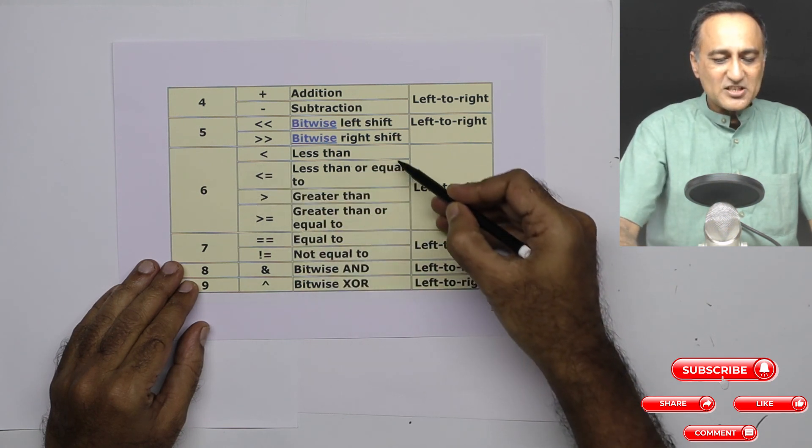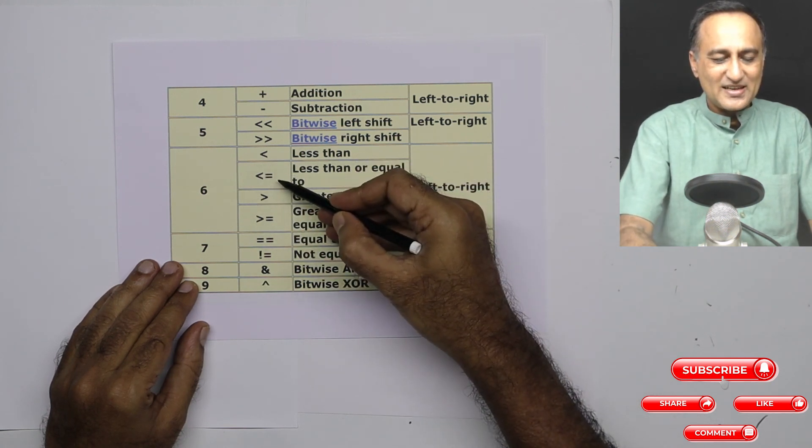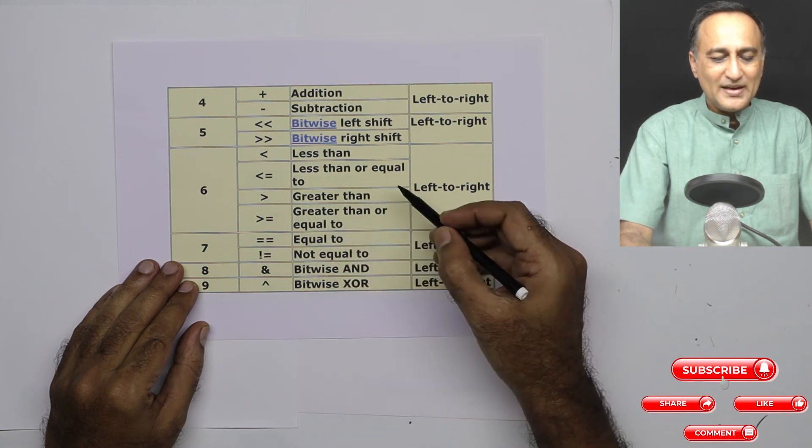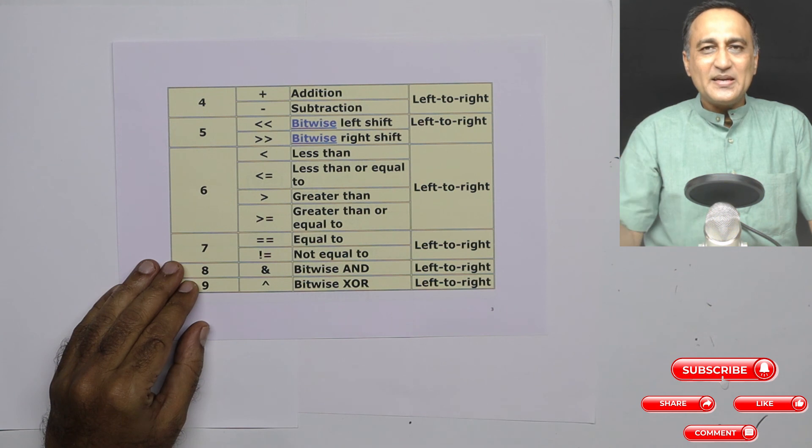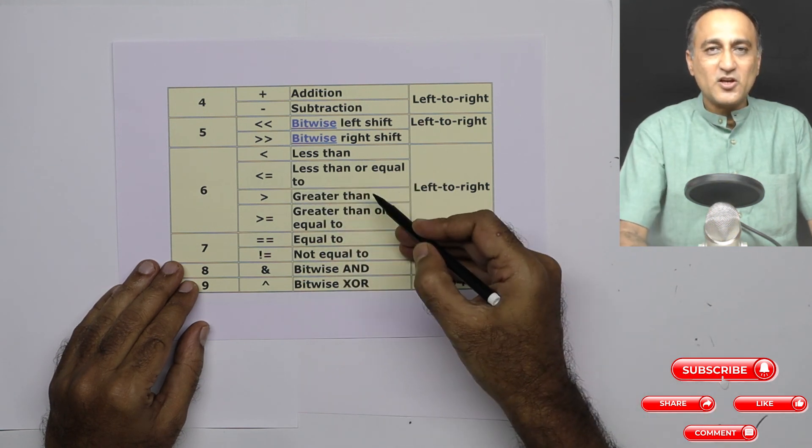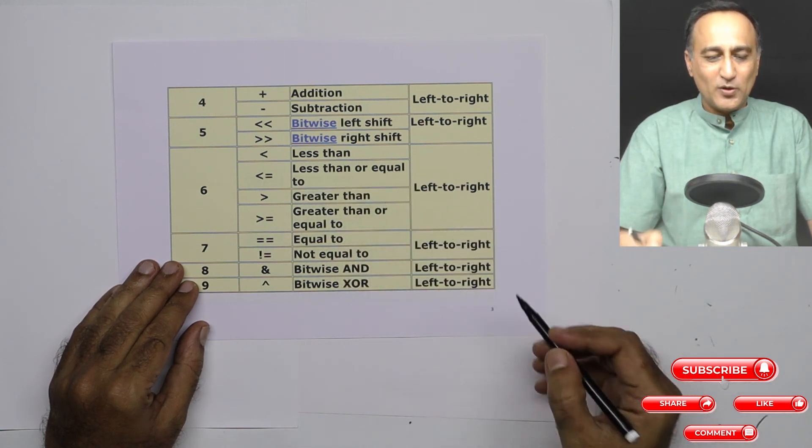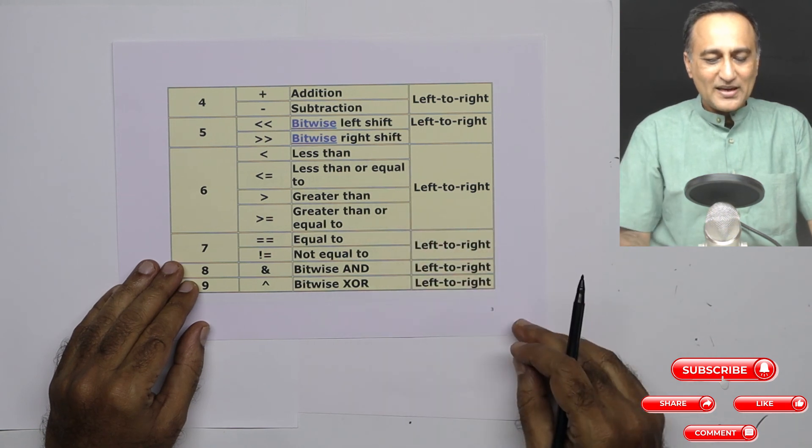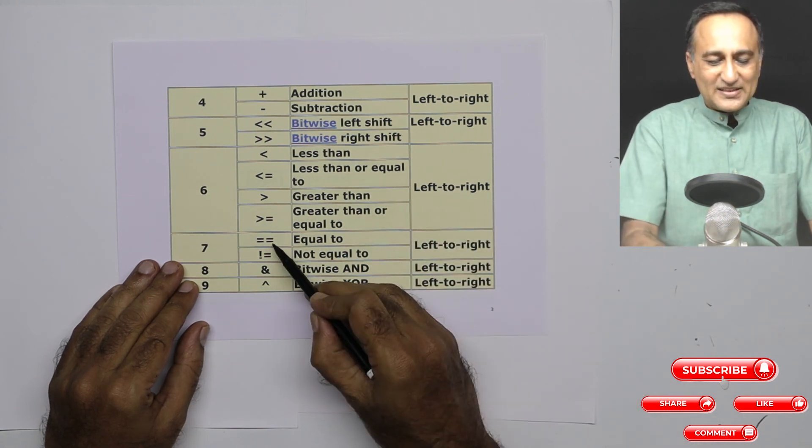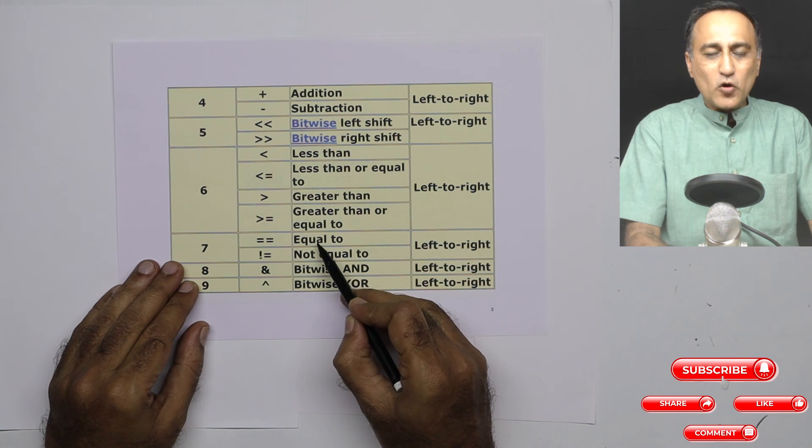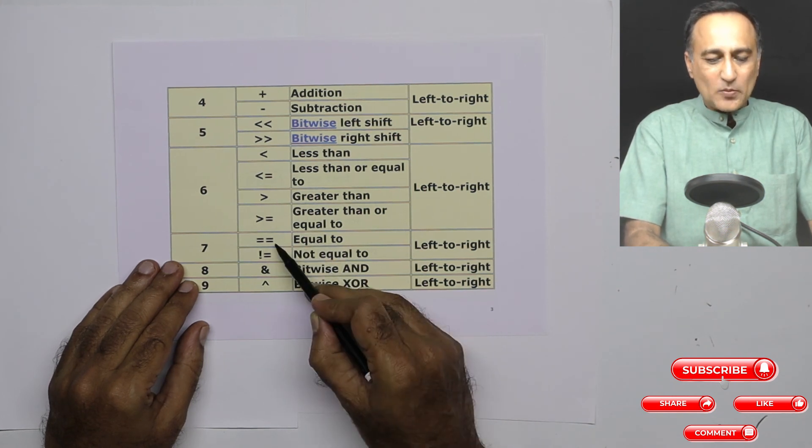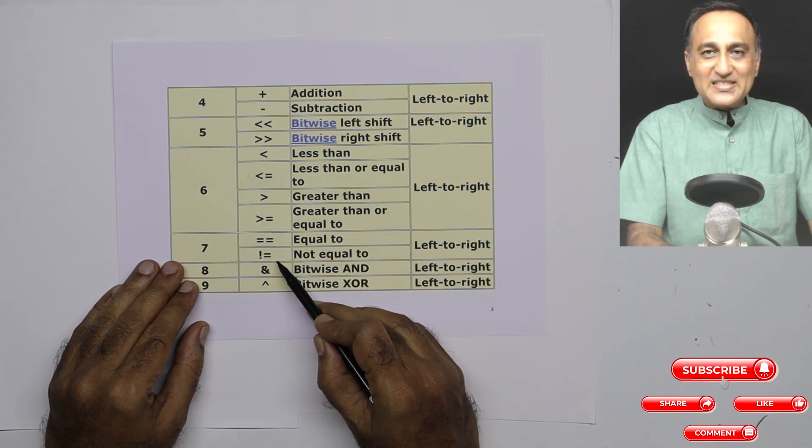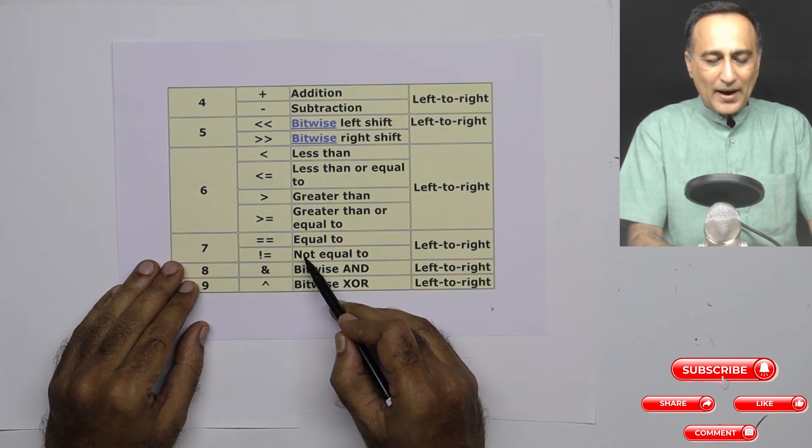These are known as relational operators, lesser than, lesser than equal to, greater than, greater than equal to. For example, if I want to say is a greater than B, that's when I use relational operators. Is a less than or equal to B, that's another example of relational operators. This is used to compare two quantities. I can say is a equal to B. This is the operator used for that. This is used for comparing is x not equal to y.